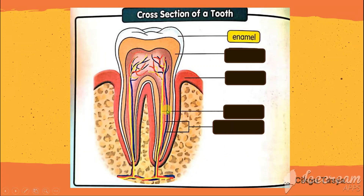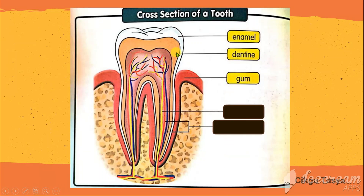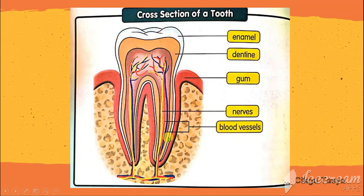So the white part of the tooth is called enamel. Below the enamel, we have dentine. Then we have gum. The yellow color is called nerve, while the red and blue colors are called blood vessels. So this is the cross section of a tooth — we have enamel, dentine, gum, nerve, and blood vessels.